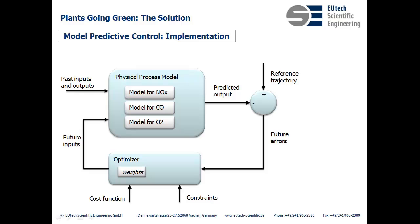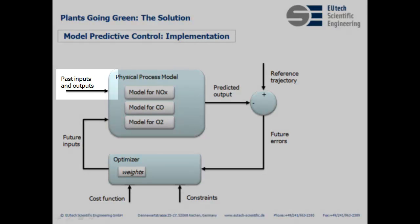This is what the controller looks like. We use past inputs and outputs to calculate a physical process model for each of the variables using the system identification toolbox. Using these models, we calculate the predicted output for the prediction horizon.